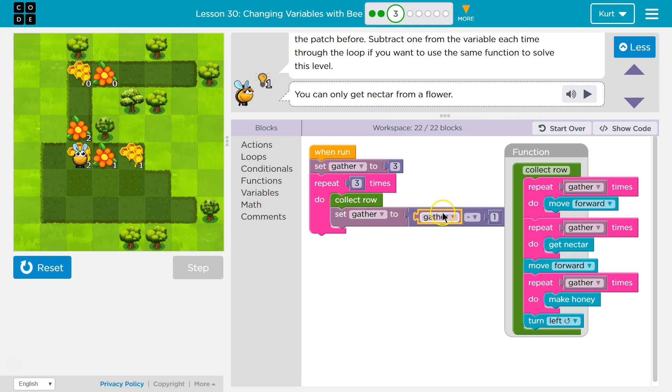Set gather to equal what gather used to equal minus 1. So then, instead of being 3, it will say gather is 3 minus 1. Now gather is 2. Boom, hit the bottom. And so then we'll collect 2. We'll go down 2, we'll collect 2, and then once the function's done, gather is now equal to 2. So 2 minus 1 is 1. And so maybe gather will be 1 then.